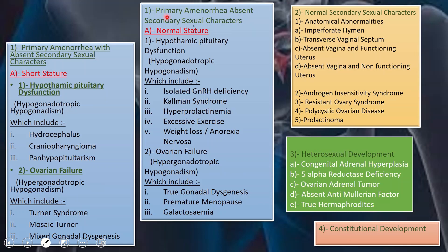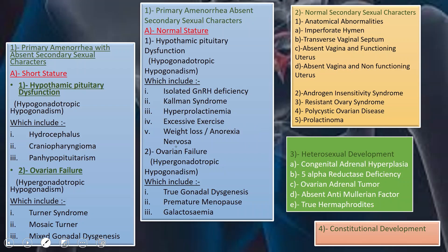In the normal stature group with absent secondary sexual characteristics, hypothalamic pituitary dysfunction (hypogonadotrophic hypogonadism) includes isolated GnRH deficiency, Kallmann syndrome, hyperprolactinemia, excessive exercise, weight loss, and anorexia nervosa. Ovarian failure includes true gonadal dysgenesis, premature menopause, and galactosemia.